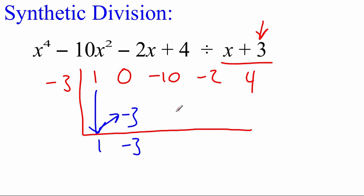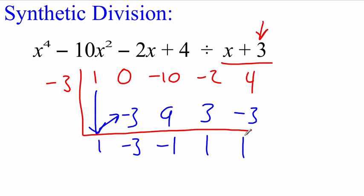and we're going to grab this negative 3 down on bottom, multiply by our original negative 3. So we get 9, and we're just going to keep adding. So negative 10 plus 9 is negative 1. Negative 1 times negative 3 is positive 3. Add these things up, we get 1. 1 times negative 3 is negative 3. Add these things up, we get 1. So this thing at the end is our remainder.